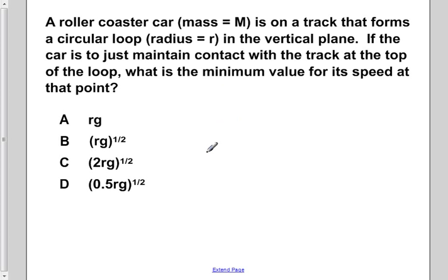We know from previous problems that in order to maintain just the smallest amount of contact and to retain our circular motion, to stay in that circular path, the centripetal acceleration has to be equal to the acceleration due to gravity.